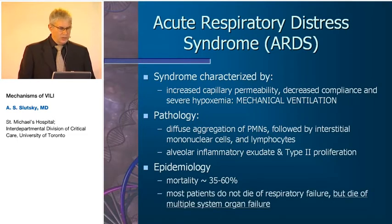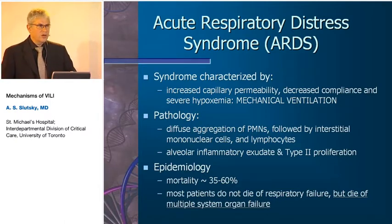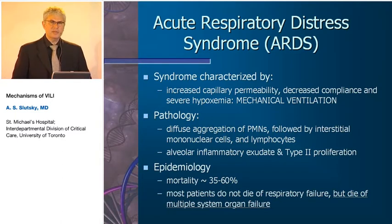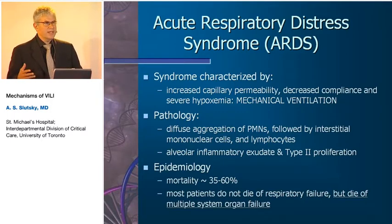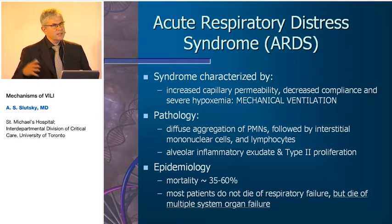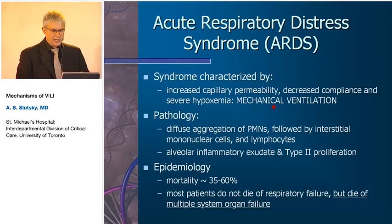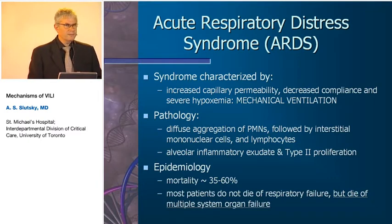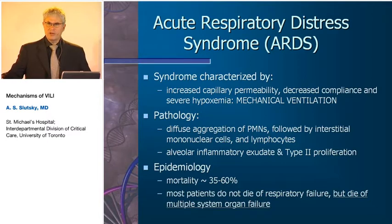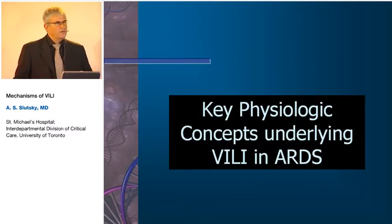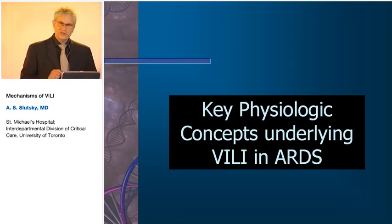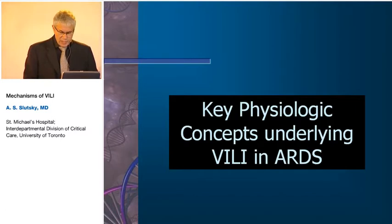What's interesting is that most patients don't die of respiratory failure — they don't die of severe hypoxemia, but of multiple system organ failure. This has been a puzzle for clinicians and scientists for decades: why does a disease largely confined to the lungs result in patients dying of other organ dysfunction? The hypothesis I want to present is that mechanical ventilation — this therapy fundamental to keeping these patients alive — may actually play a major role in leading to their demise if not done appropriately.